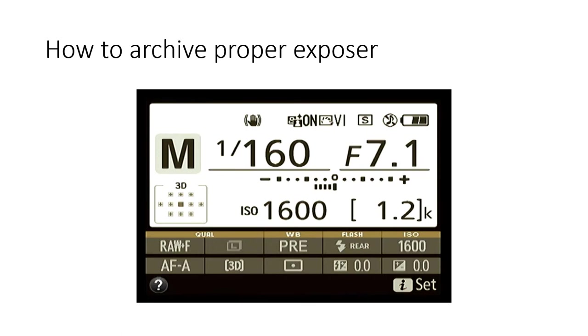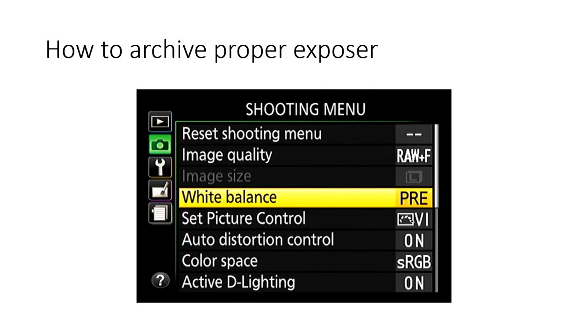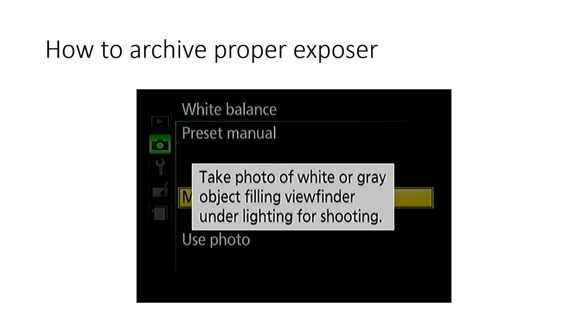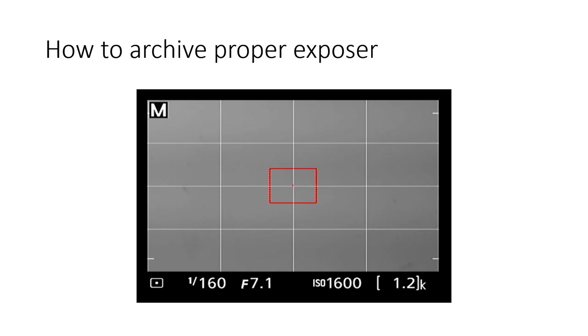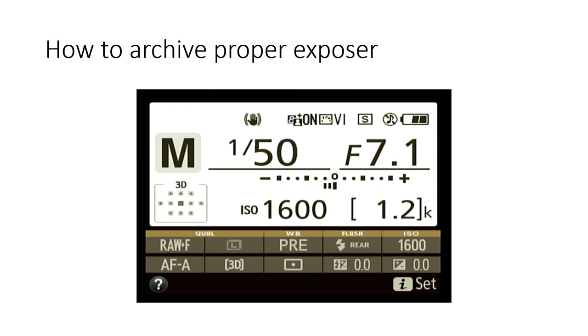This is the exposure triangle: if you change ISO, you'll need to adjust shutter speed or aperture to keep the correct exposure. To get correct white balance, place a white card in front of the camera, go into settings, and take a picture of it. Then switch to an 18% gray card and adjust shutter speed — in this example, 1/40th of a second, f/7.1, ISO 1600.